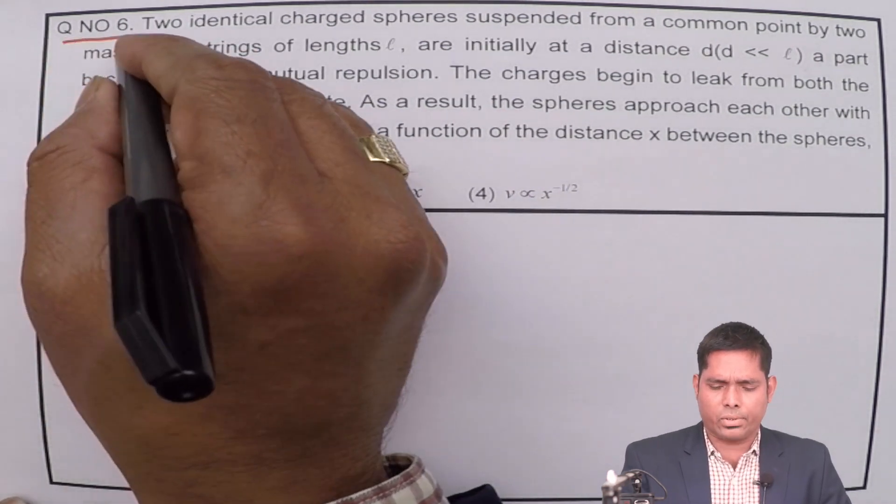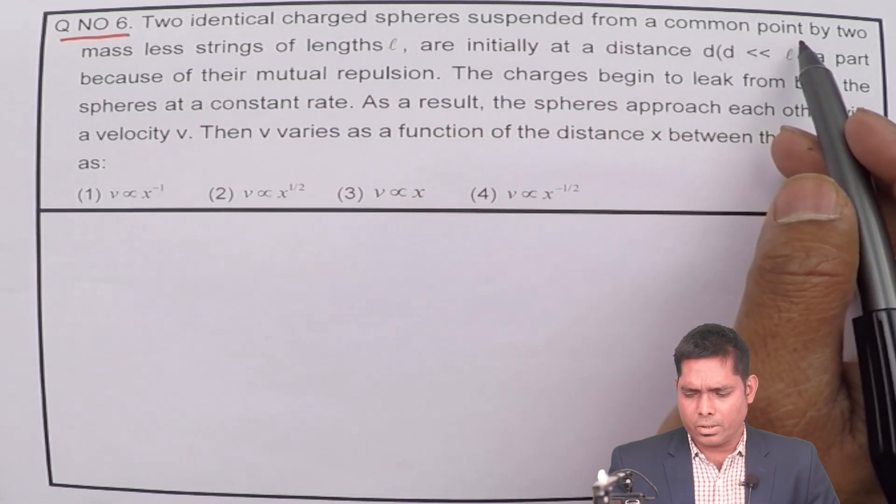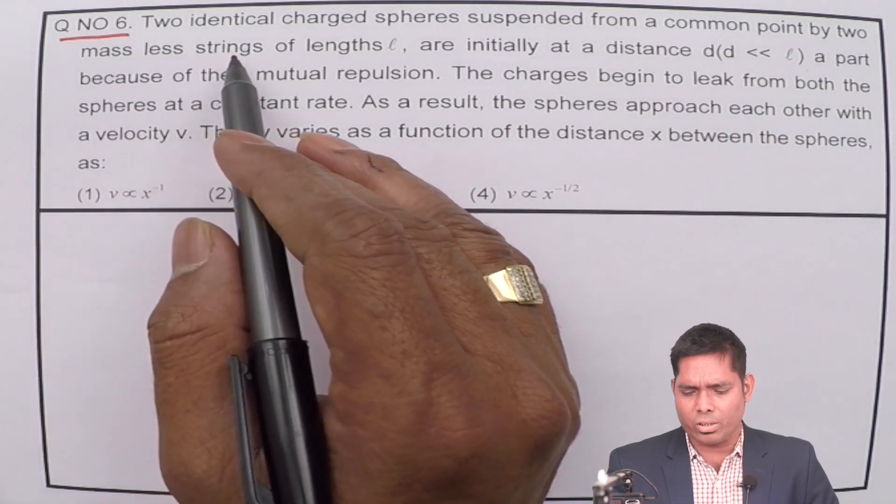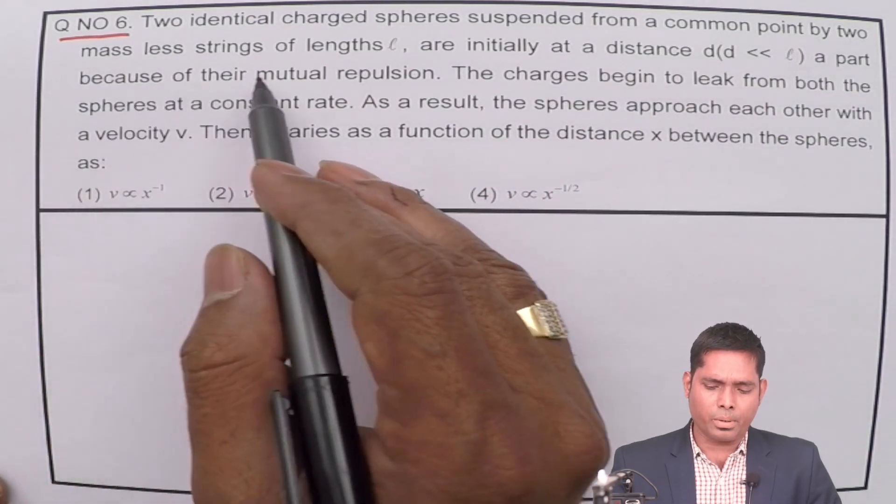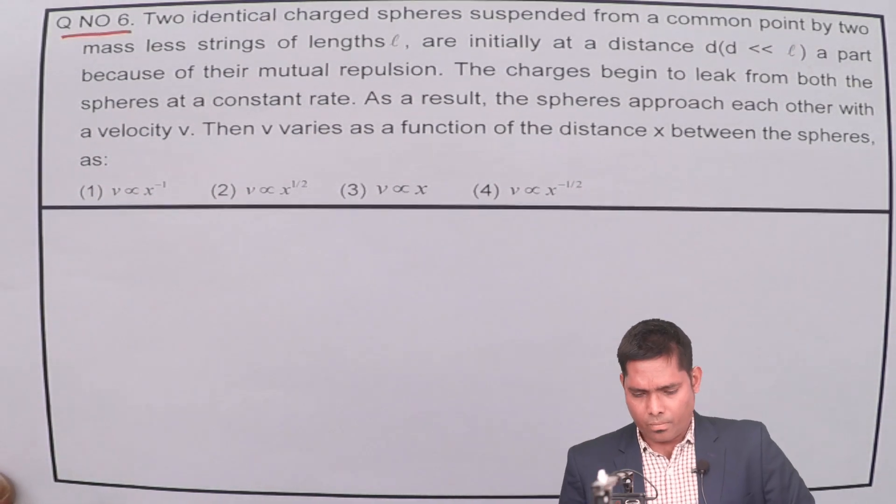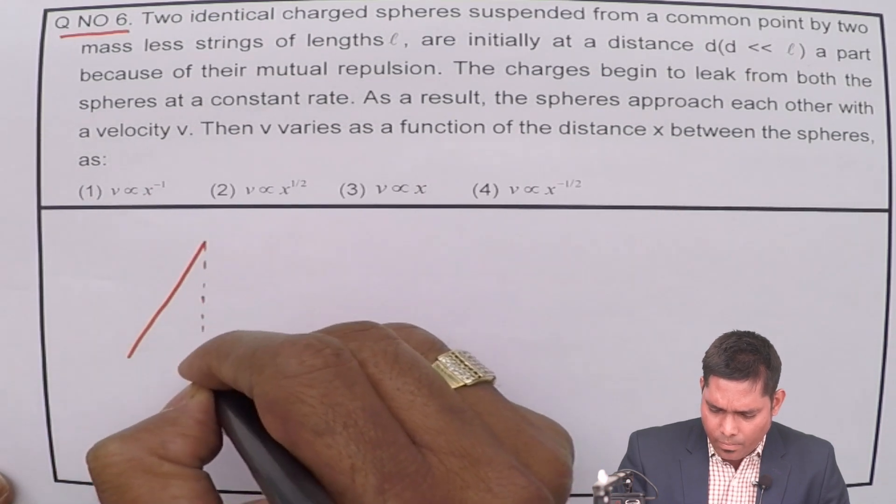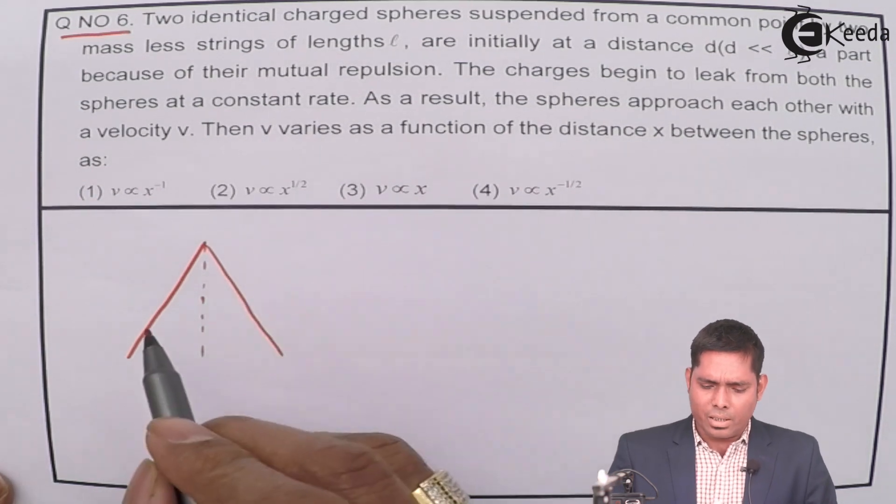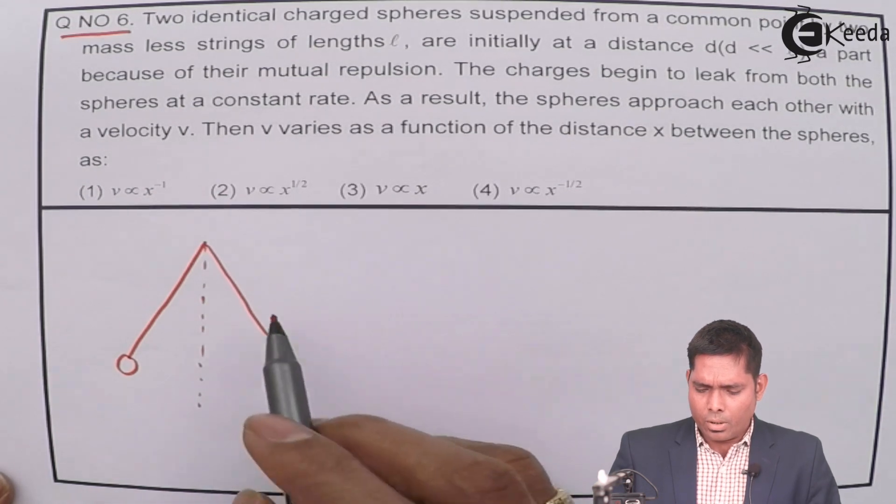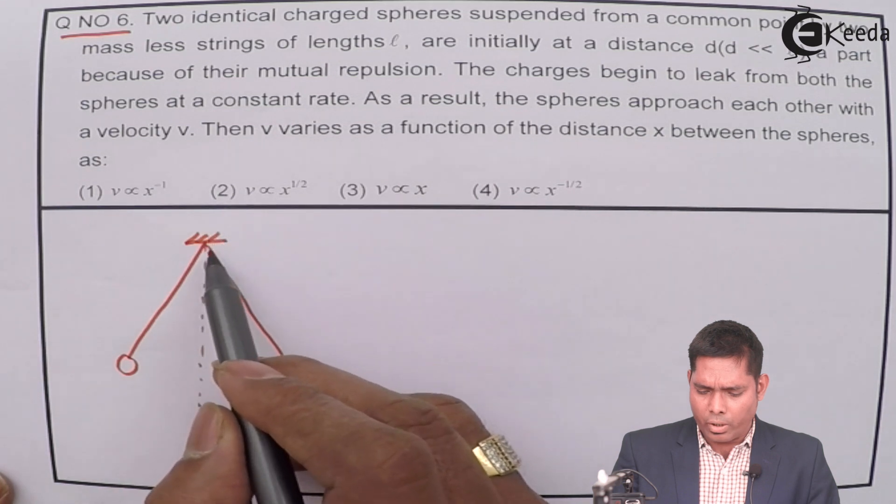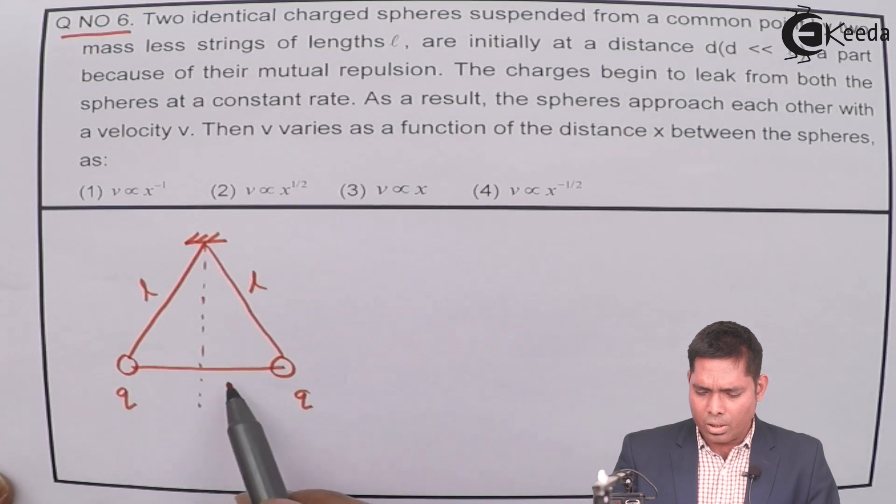Hello students, let us solve question number 6. Two identical charged spheres suspended from a common point by two massless strings of length L are initially at a distance D apart because of their mutual repulsion.